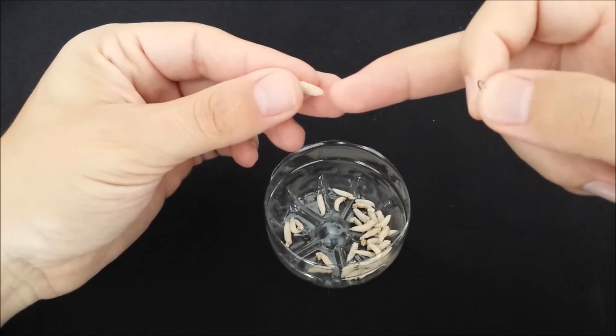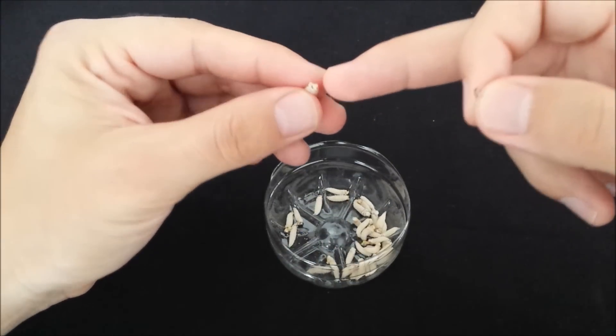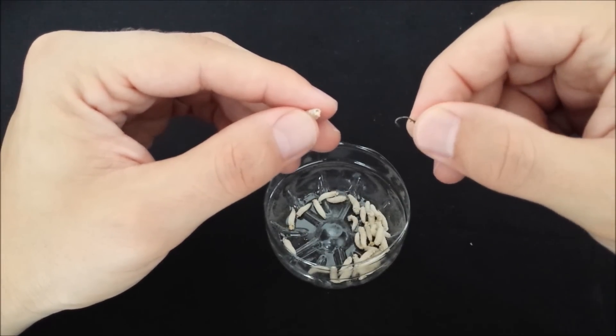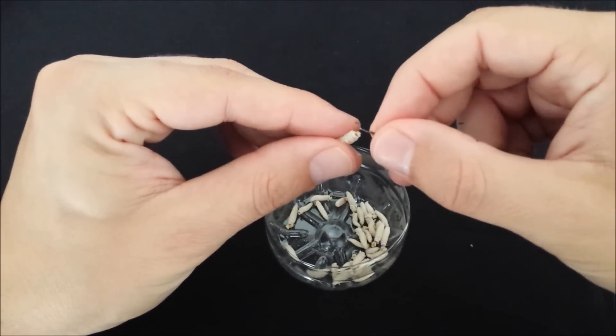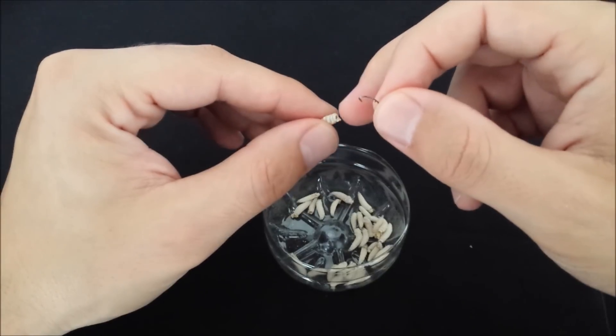When you want to hook a maggot, you will not go through the body or the head because there is no point. The maggot's gonna die on your hook straight away. If you hook properly, the maggot's gonna stay alive in the water for a while.